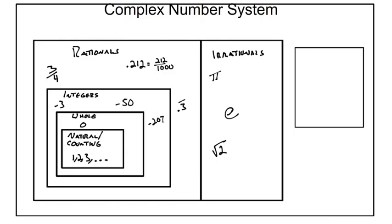And all this stuff that I've talked about together, these are called our real numbers. These are our real numbers. That's your real number system. But then we got this oddball category out here. We got our imaginary numbers.